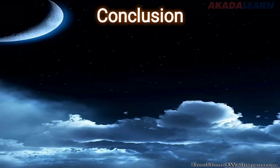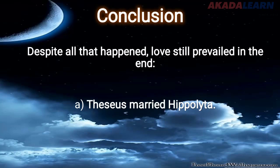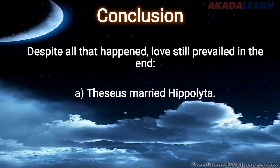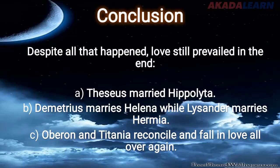In conclusion, despite all that happened, love still prevailed in the end. Theseus married Hippolyta, Demetrius married Helena, Lysander married Hermia, and Oberon and Titania reconciled and fell in love all over again.